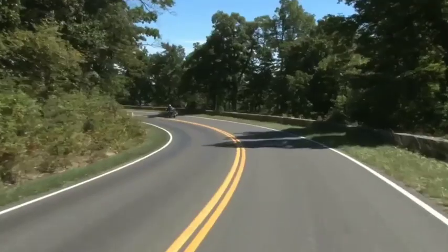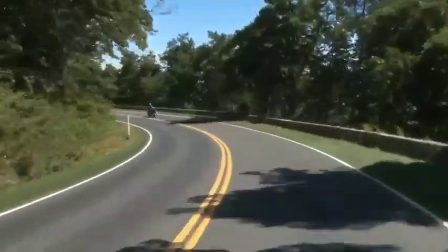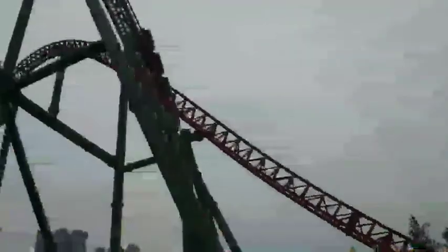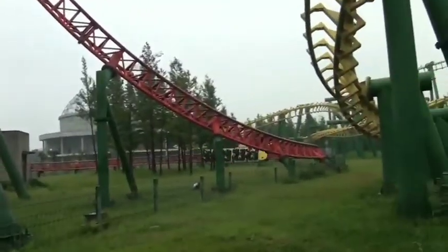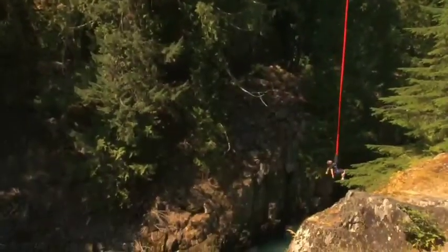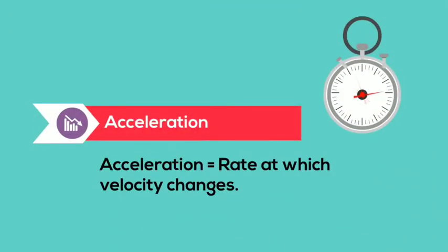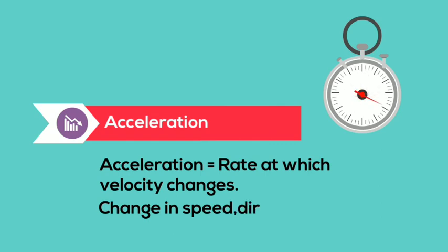Acceleration: what do these examples have in common? They are all examples of acceleration. Acceleration is the rate at which velocity changes. This change in velocity can be a change in speed, direction, or both. An object accelerates if its speed, direction, or both change.